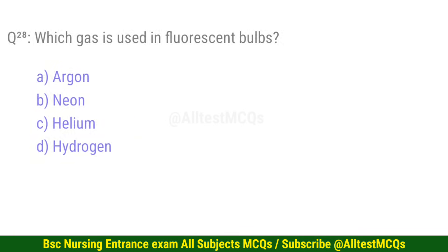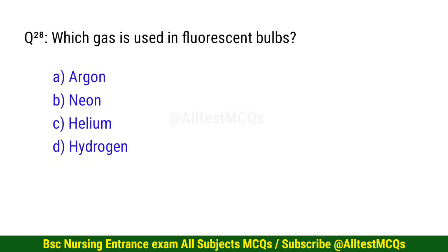Question number 28. Which gas is used in fluorescent bulbs? The right option is B: Neon.